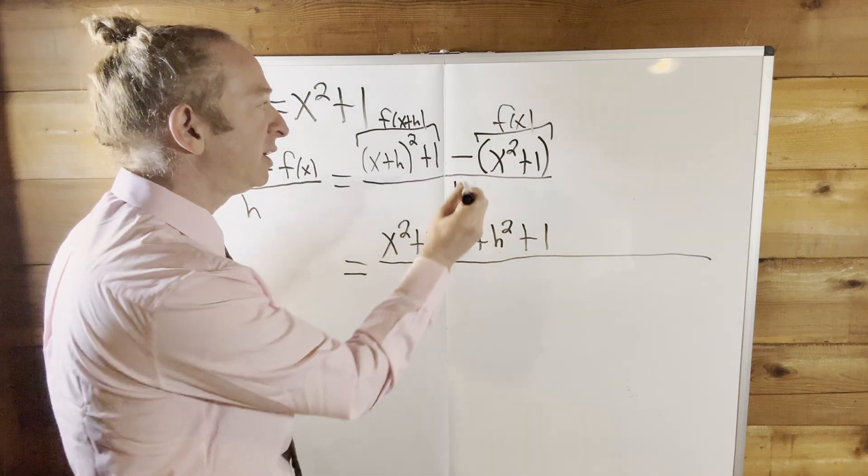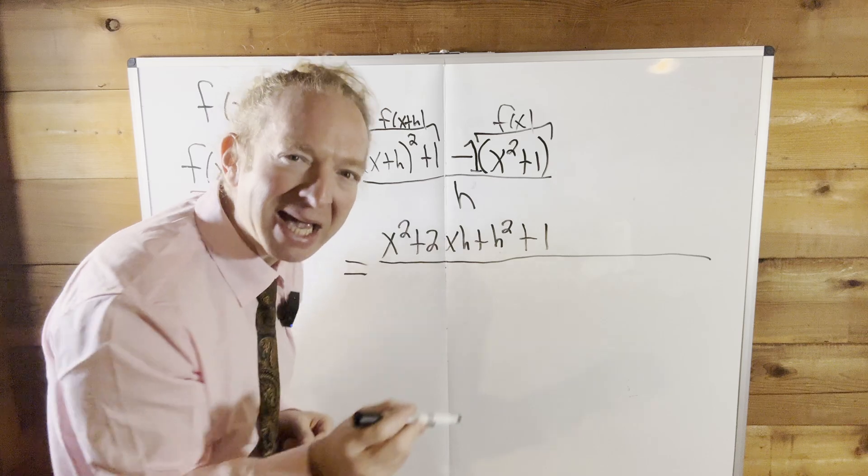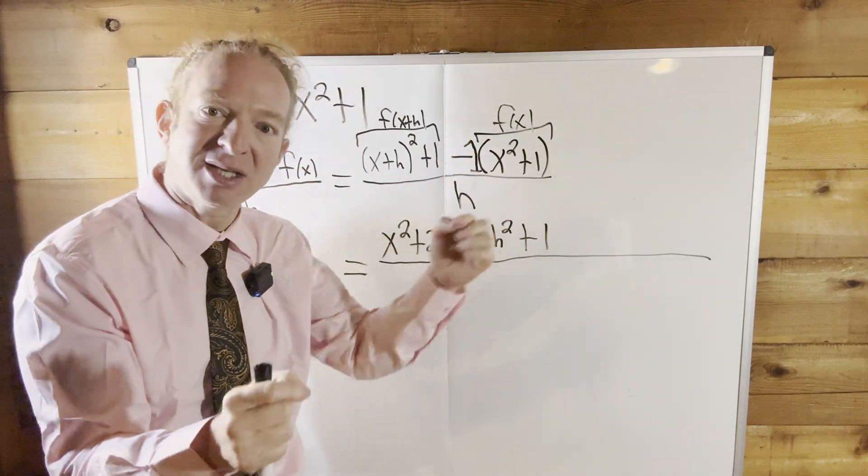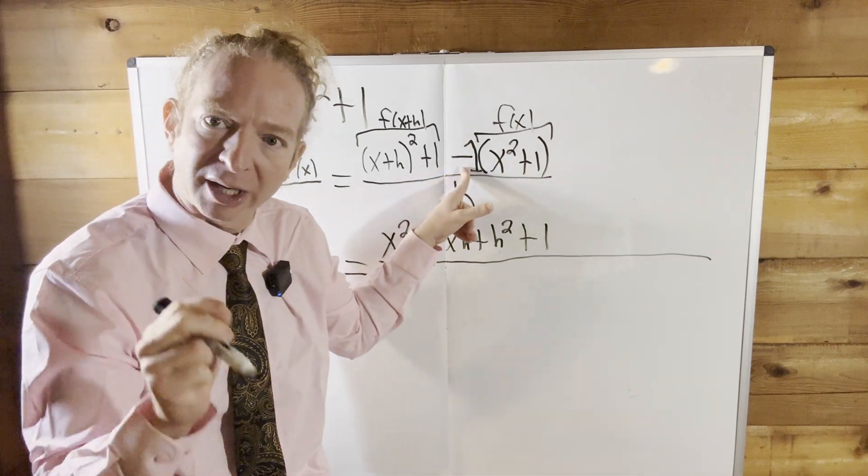There is actually a 1 here. In mathematics, when we do this, there's an implicit 1. It's implied in mathematics, okay? That's one of the rules for math. Whenever you see the minus in a parenthesis, there's a 1 there, okay?